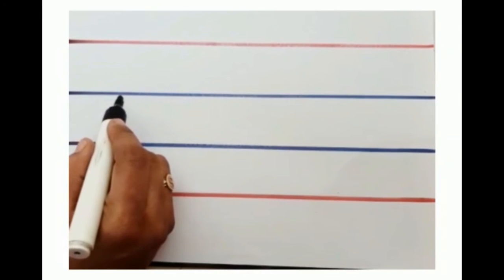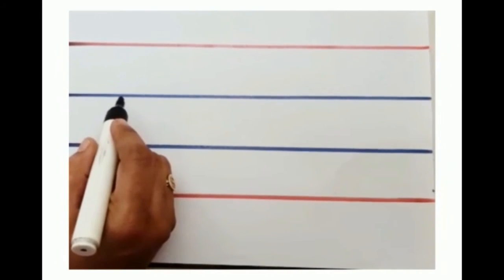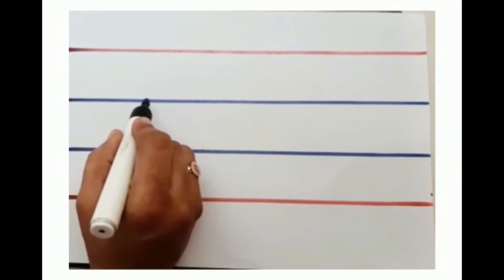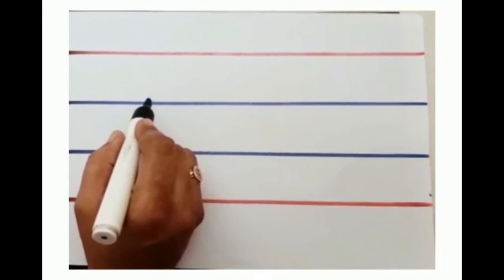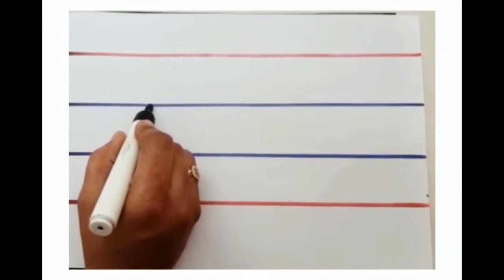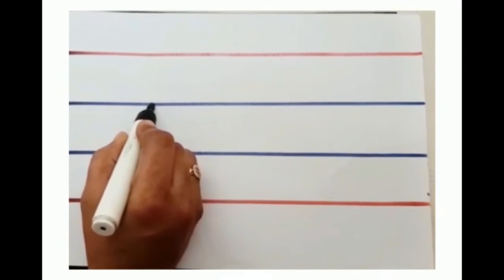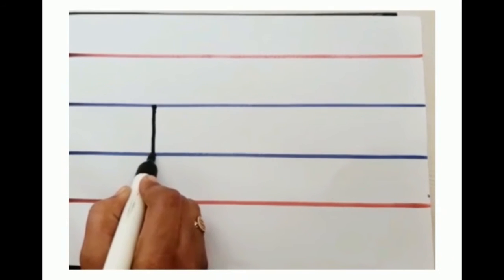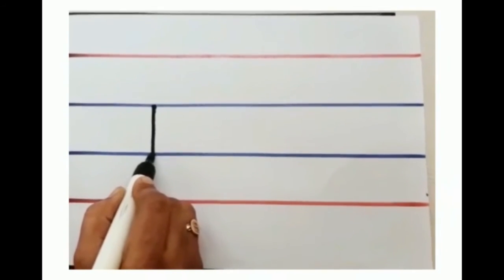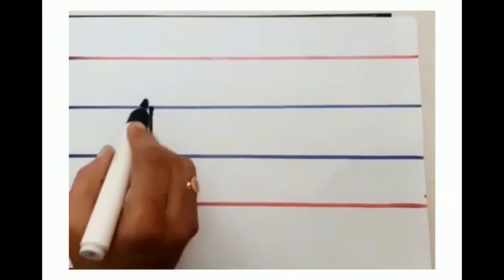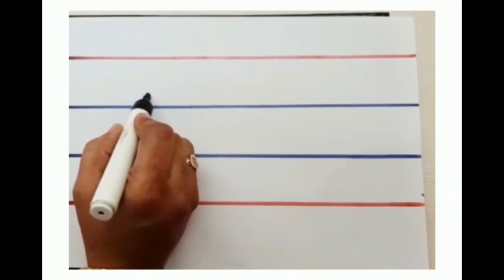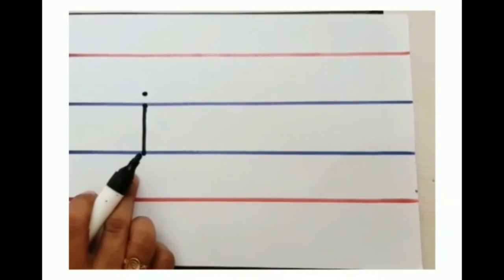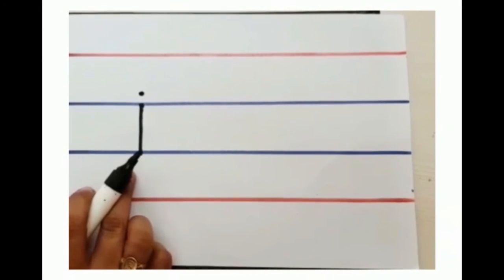I am going to show you how to write small letter i. Start from the second blue line. Come down children. Touch the third blue line, like a standing line. Keep one dot on blue line. This is a small i.